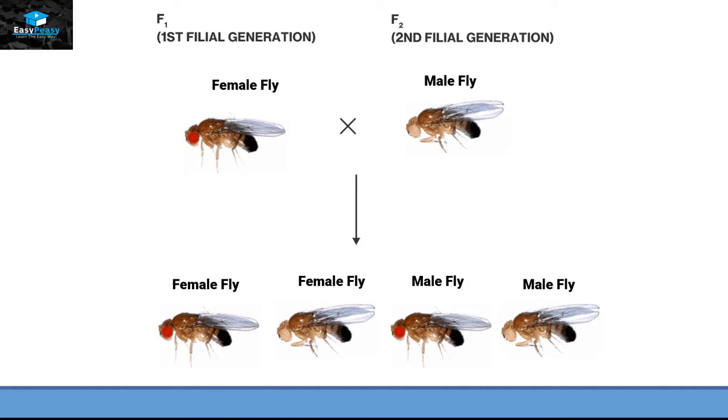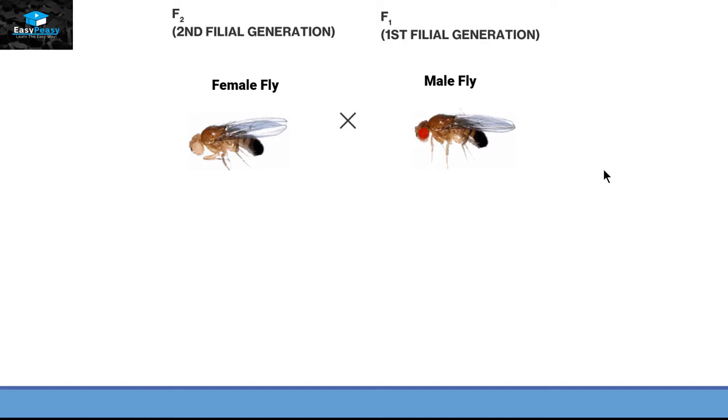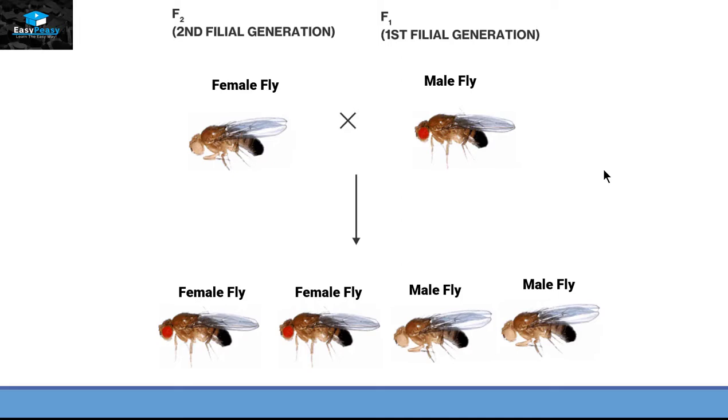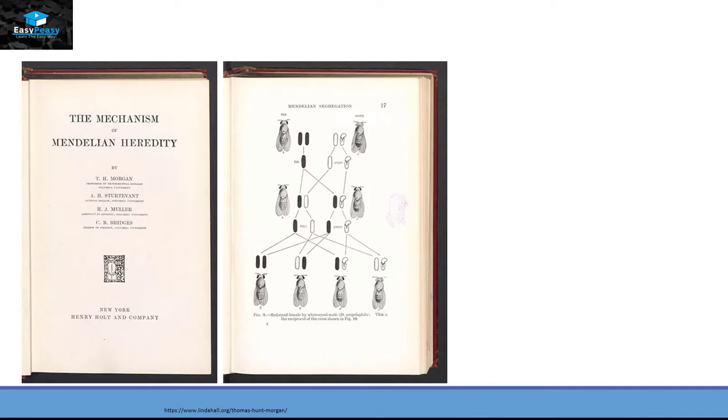Then he switched the experiment by using white-eyed female fly with the red-eyed male fly from the F1 generation. And the results were that all the white-eyed fruit flies were male flies. At this point, he concluded that the eye color is somehow related to the gender of this fruit fly.